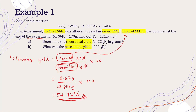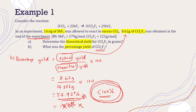Usually the percentage yield is lower than 100%. Why? In an experiment, many errors can occur — for example, mass not weighed properly or the chemical does not react 100%. So the actual yield is lower than the theoretical yield. If you calculate and get more than 100%, say 120%, that means your answer is wrong — you cannot obtain more product than theoretically predicted. Make sure your percentage yield calculation is always lower than 100. Our answer of 57.92% is correct because it is lower than 100.